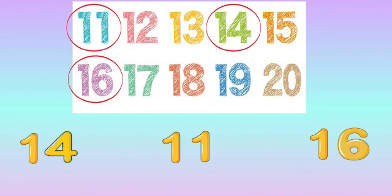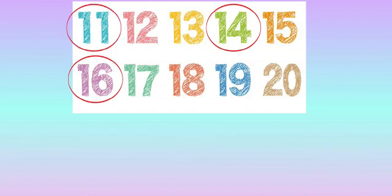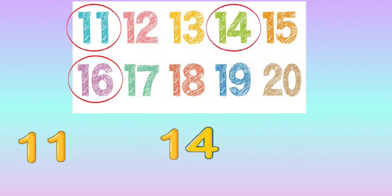Now what we are going to do is arrange these 3 numbers from small to big. The first number we see here is 11, the smallest number in this group. Then number 14, and the biggest number is 16.